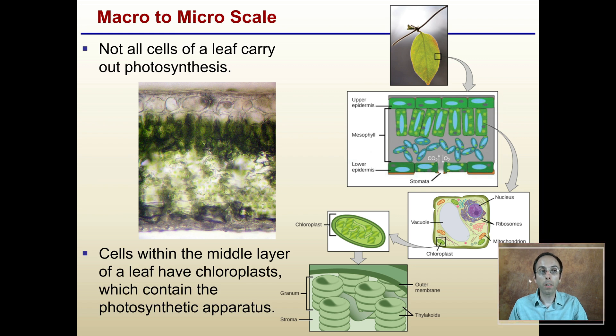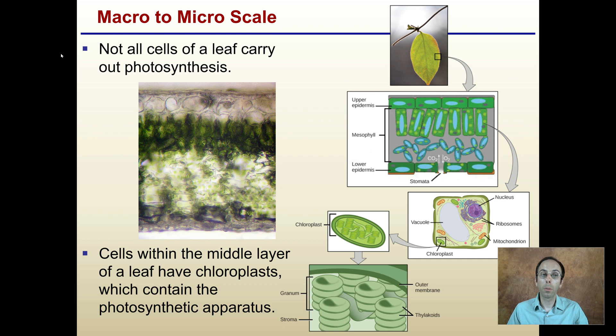Looking at photosynthesis on a macro and micro scale, not all cells within a plant have all the components to carry out photosynthesis. Cells in the middle layer of the leaf have the chloroplasts, which contain the photosynthetic apparatus. We see that here, the dark green region. The top is the cuticle, a waxy protective layer. This dark green section is where the photosynthesis occurs at the highest rate.